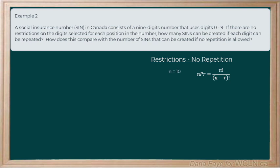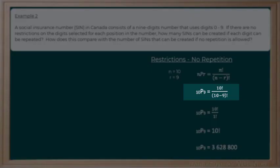So, N is going to be equal to ten, and we are ordering nine of them. So, R is going to be equal to nine. So, here's our equation for NPR, where ten P9, so we've got ten factorial, all divided by ten subtract nine factorial.